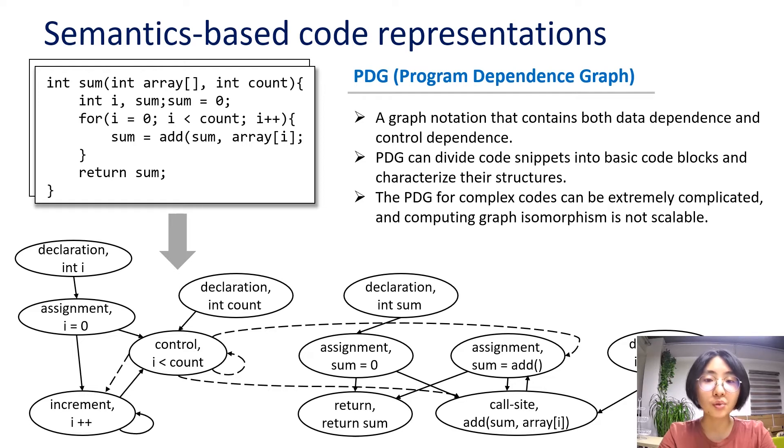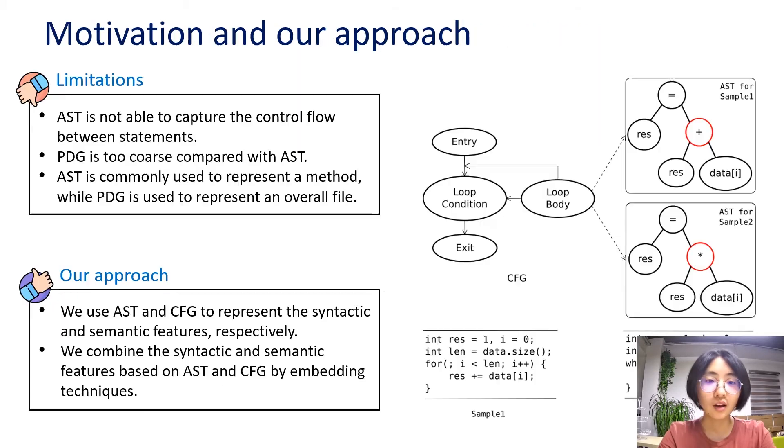As you can see, just a simple for loop will produce such a complicated graph and the directed connections are also intricate. Since it is so complicated, computing graph isomorphism is not scalable and analyzing the PDG as semantics-based representation has limitations in large-scale procedures. In summary, existing approaches have limitations in detecting functional code clone. On the one hand, although AST can represent the abstract syntax of source code, it is not able to capture the control flow between statements. On the other hand, each node in PDG is a basic code block, which is too coarse compared with AST. The improper granularity may lead to a lack of details inside code blocks.